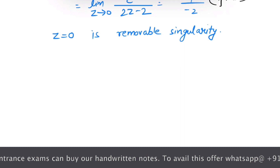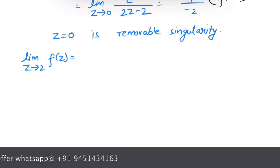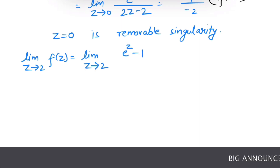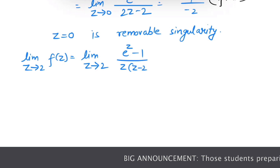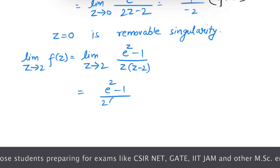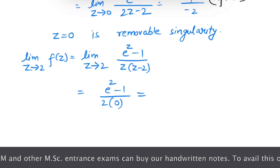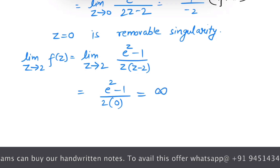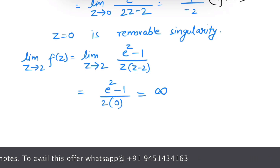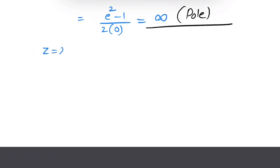For the second singularity z equals 2: finding the limit as z tends to 2 of f of z, which is (e raised to power z minus 1) over z(z minus 2). On putting the limit, we get (e squared minus 1) over 2 times 0. We know that a finite value over 0 gives infinity. So the limit is infinity, which means we have a pole here. Hence, z equals 2 is a pole.